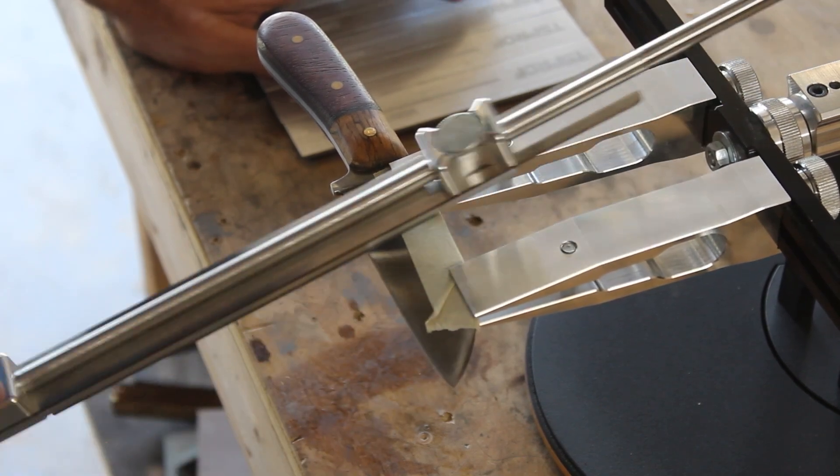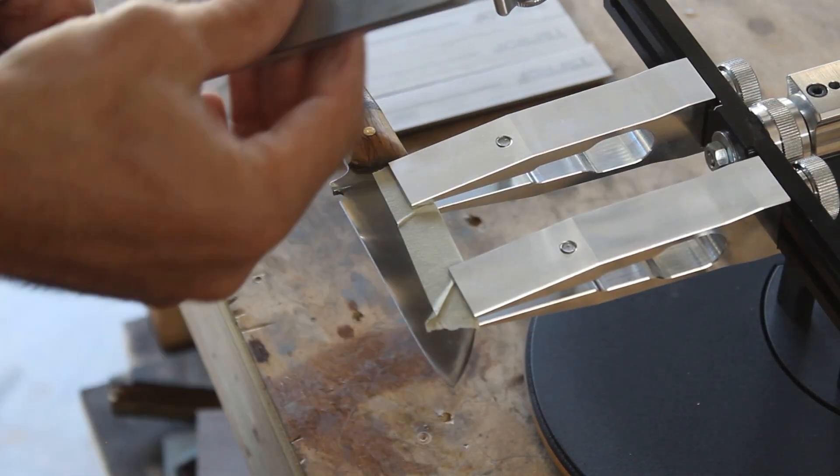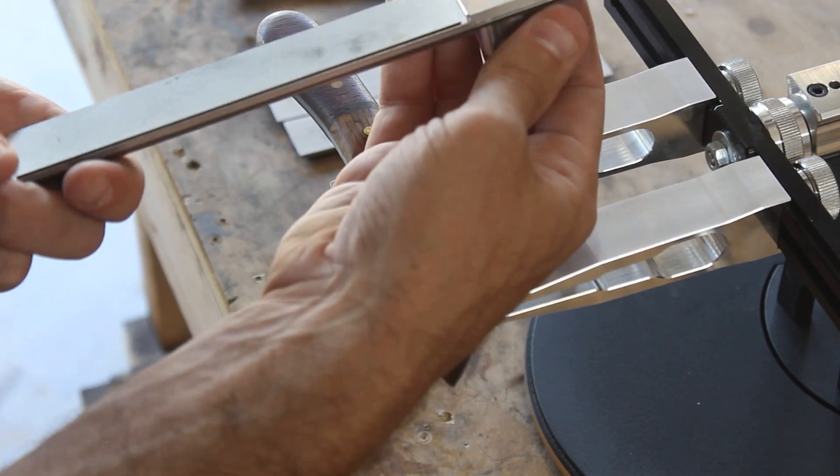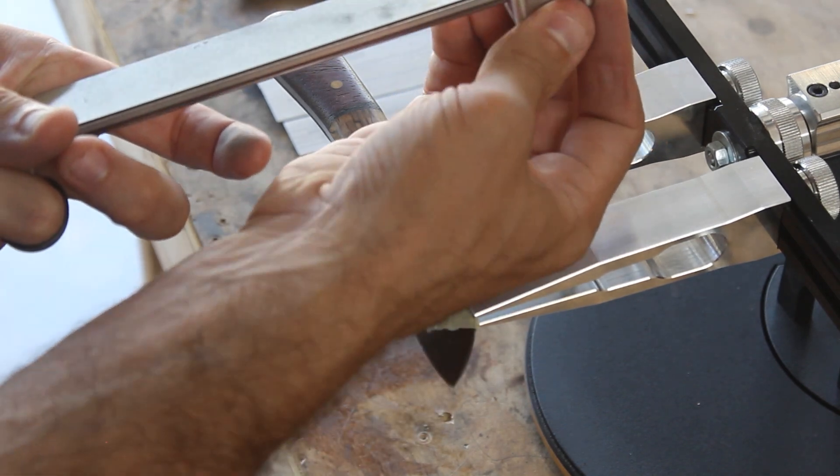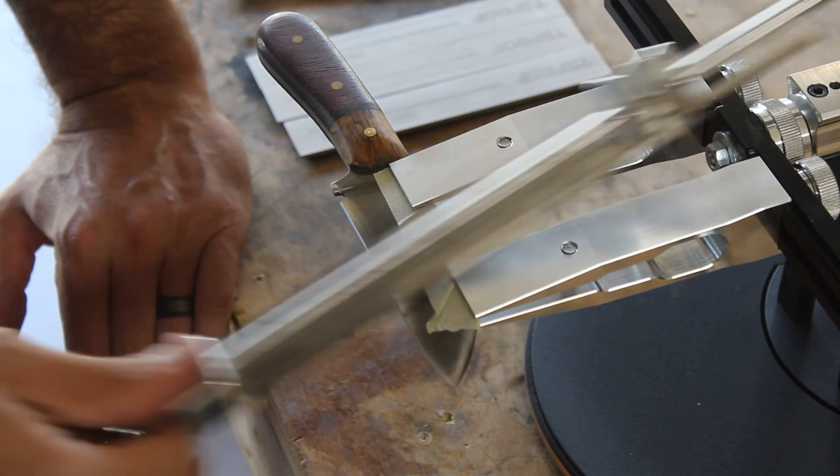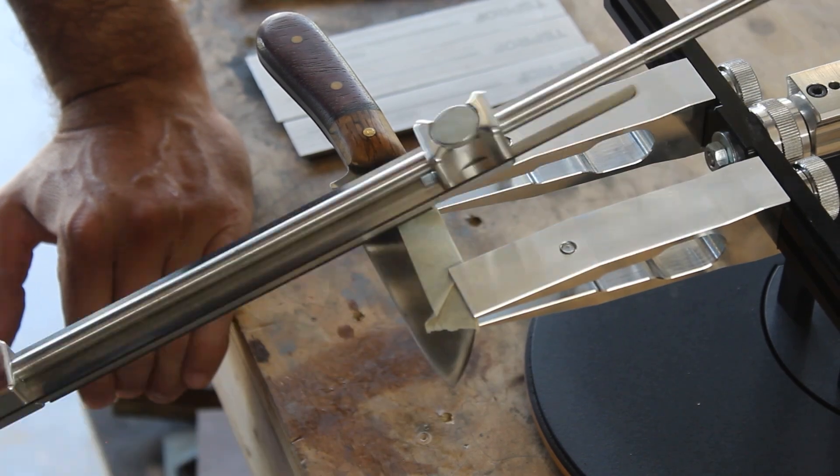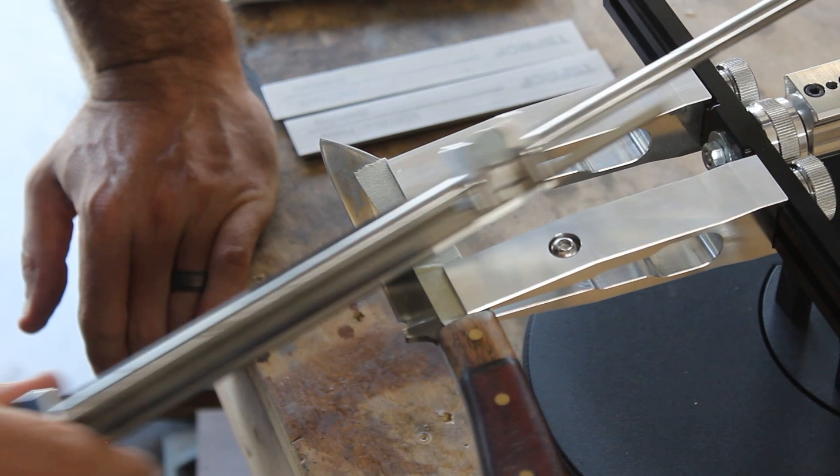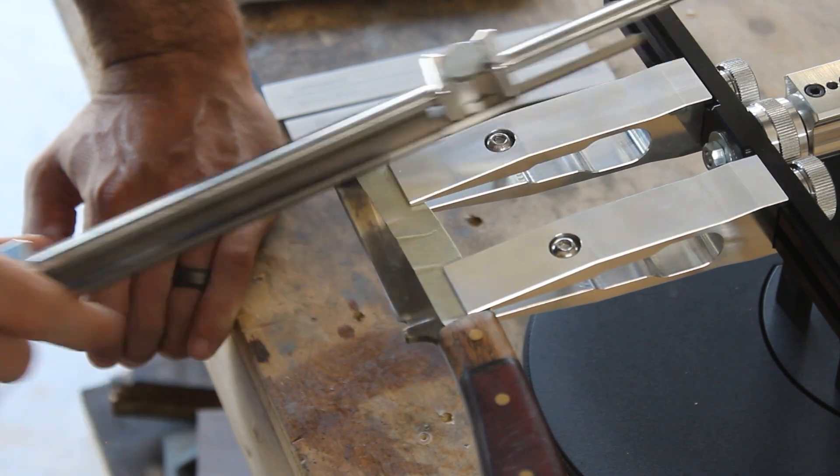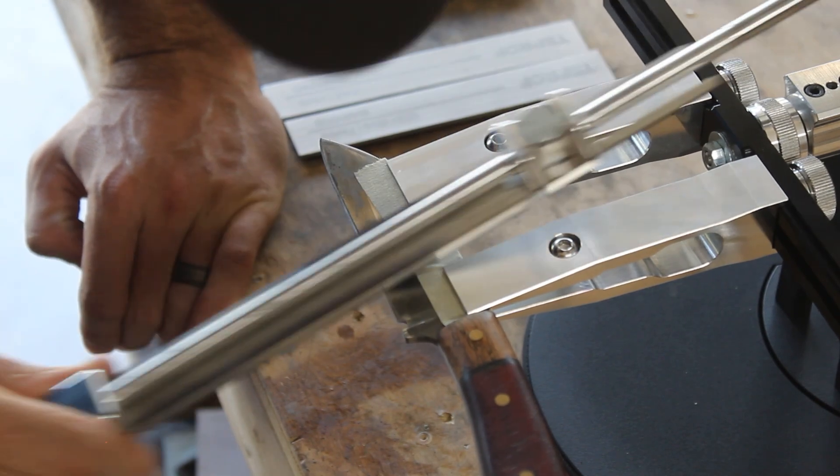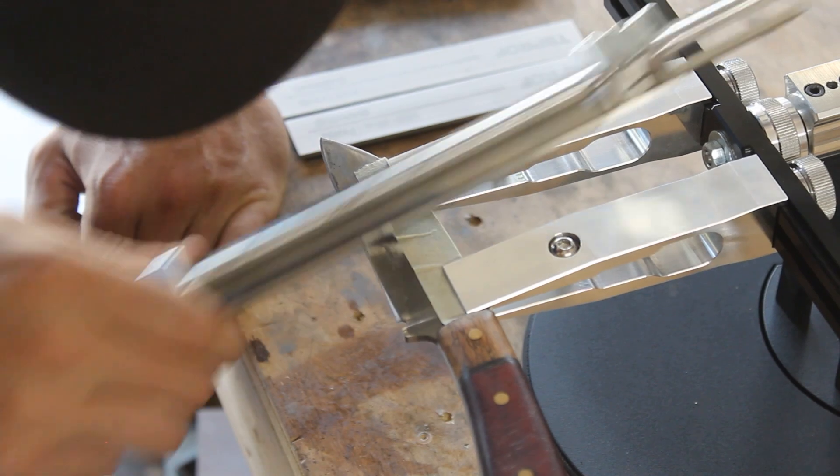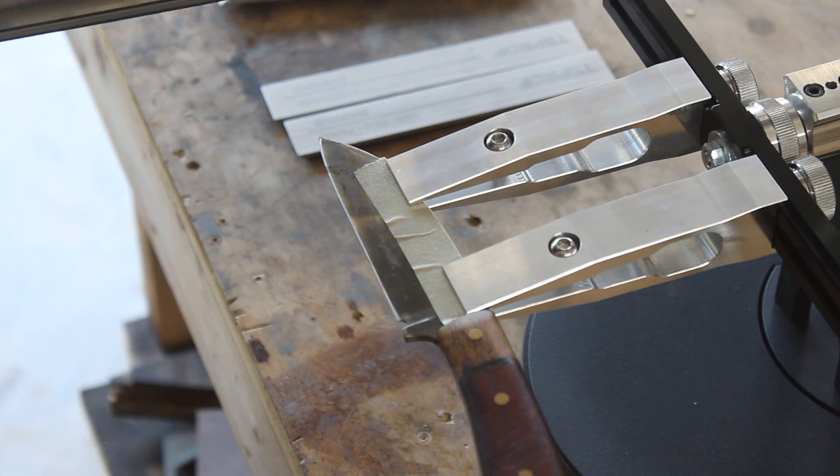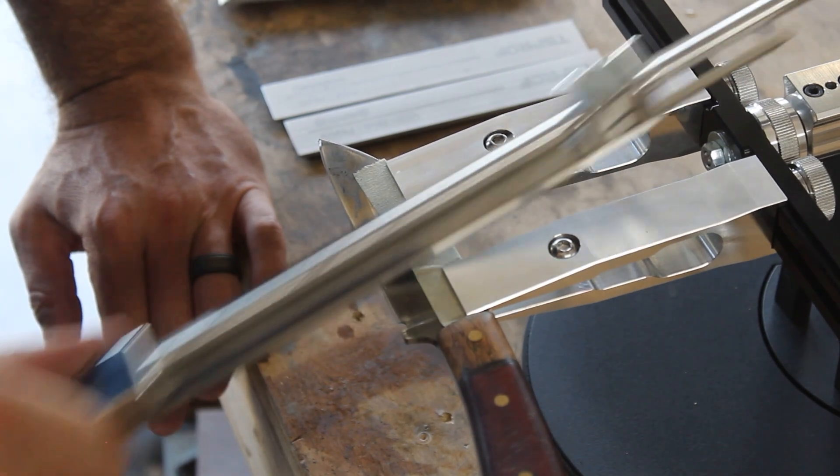At that point, I'll go ahead and swap the stones. So I'll continue to repeat this process, making sure that I get an even burr on both sides with every stone all the way up to a thousand grit. Once that's done, the knife should essentially be sharpened. I will go ahead and strop the knife after that, just to make sure that I remove the burr and get it as sharp as possible. And then we will do some sharpness testing.